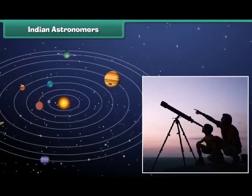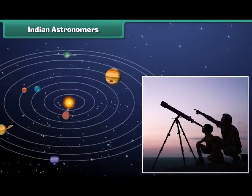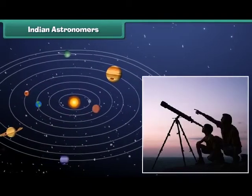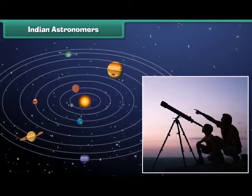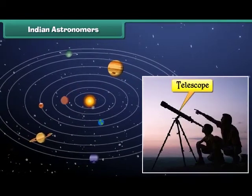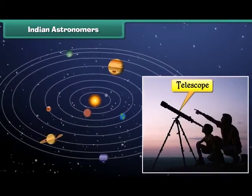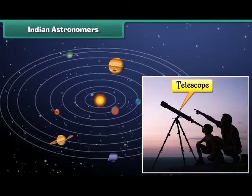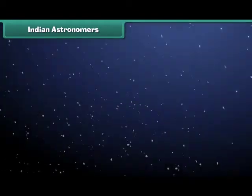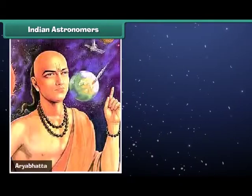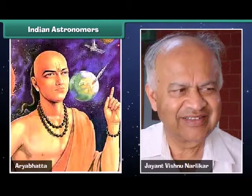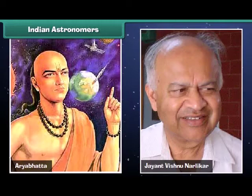An astronomer is a person who studies stars and planets. He uses a telescope for his study. Bhaskaracharya, Aryabhatta and Jayant Vishnu Narlikar are some well-known Indian astronomers.